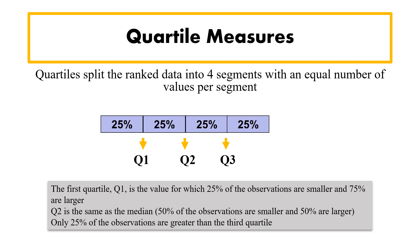Next we have quartile measures. Quartiles split data into four segments, each with an equal number of values — 25 percent per segment. The first quartile Q1 is the value for which 25 percent of observations are smaller and 75 percent are larger. Q2, also known as the median, has 50 percent of observations smaller and 50 percent larger. Q3 has only 25 percent of observations greater than it.